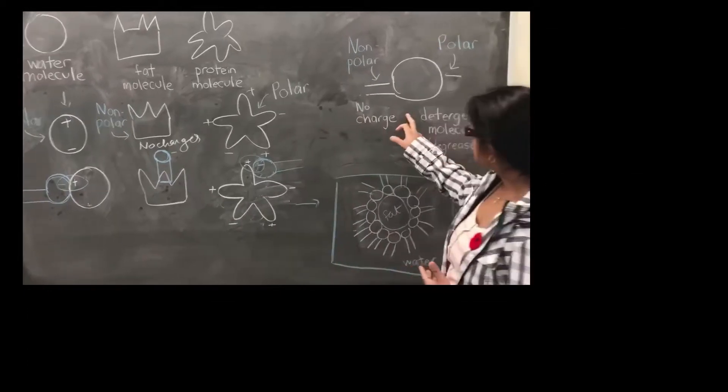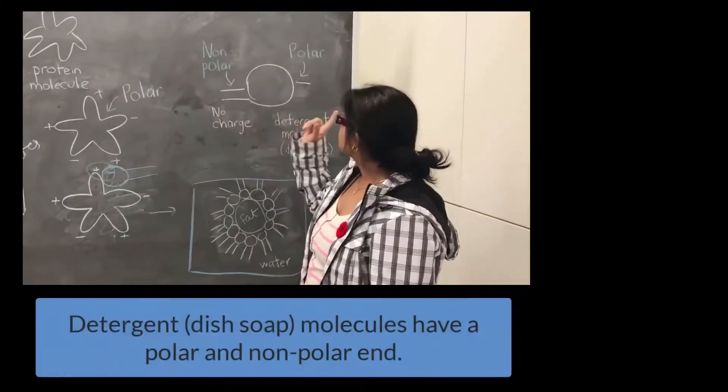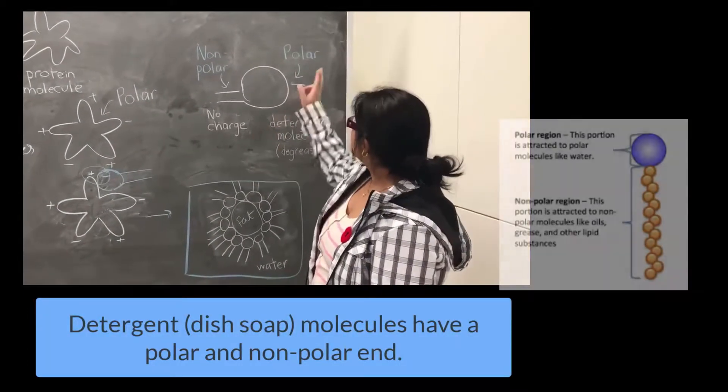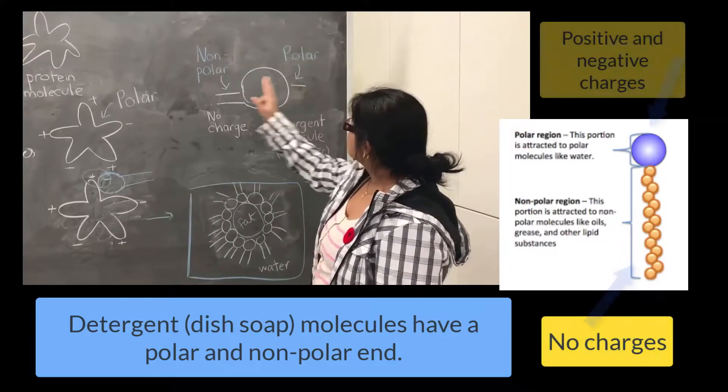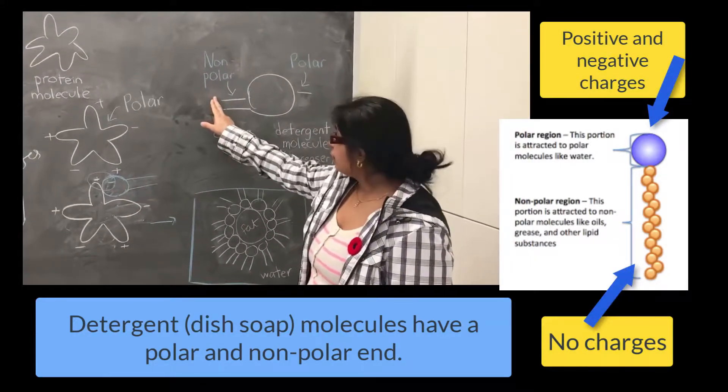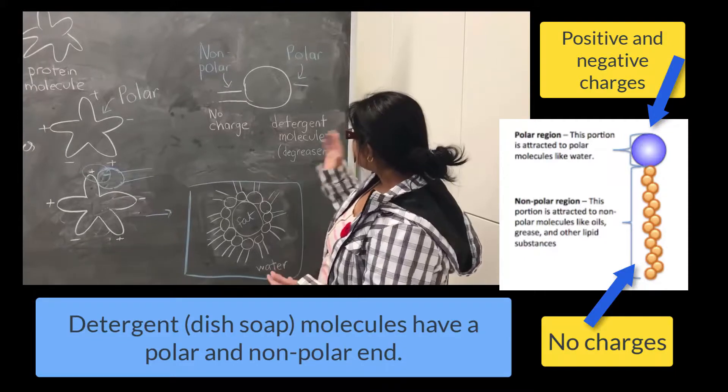What happened when we put the detergent molecule? The detergent has the two ions. One ion is polar and the other ion is non-polar. And it also acts as a degreaser.